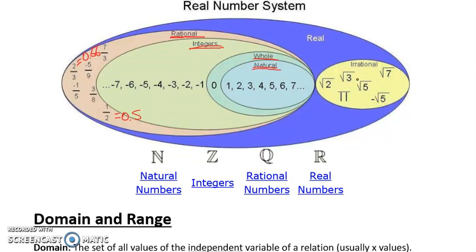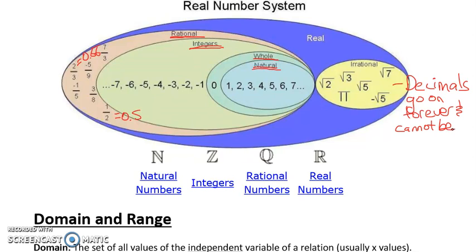The difference between a rational number and an irrational number is that we have a way to write a rational number as a fraction, rather than something that cannot be written as a fraction and whose decimal goes on forever. And so that brings us to irrational numbers. All of these irrational numbers have decimals that go on forever, and they cannot be written as a fraction or a rational number.